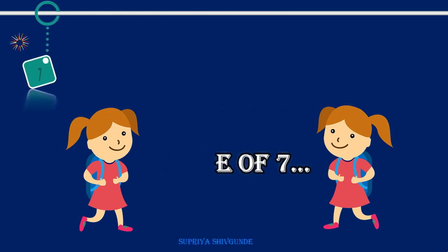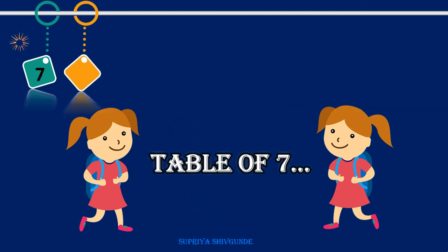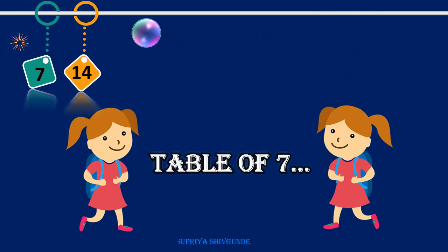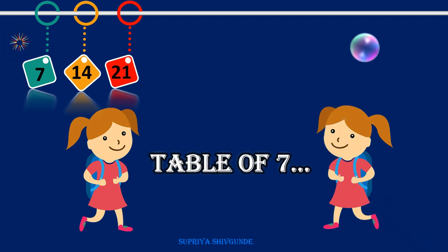Seven ones are seven, seven ones are seven. Seven twos are fourteen, seven twos are fourteen. Seven threes are twenty-one, seven threes are twenty-one.